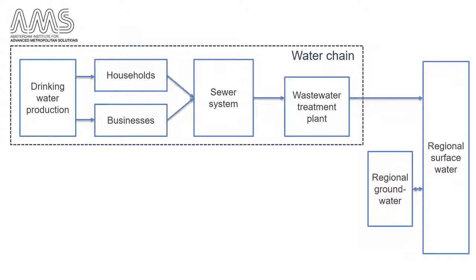Let us take a look at the slide showing the pathways of the water. As you can see, the flow of the water in the small water cycle or the water chain is relatively straightforward. Water is flowing from the drinking water system into the wastewater system and from the wastewater system to the wastewater treatment plant. On the other hand, rainfall that runs off as storm water can go many ways.